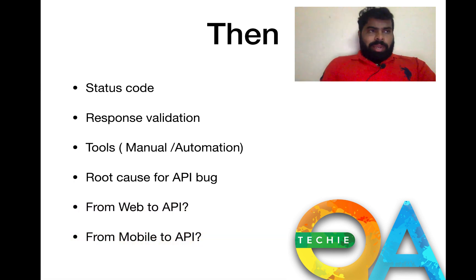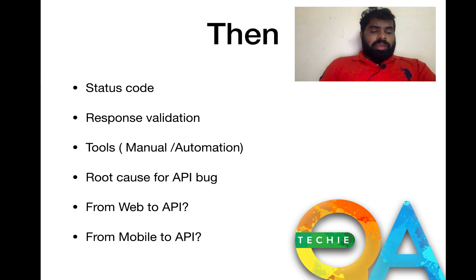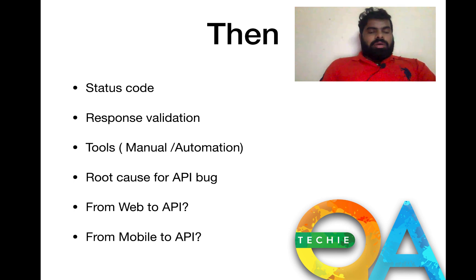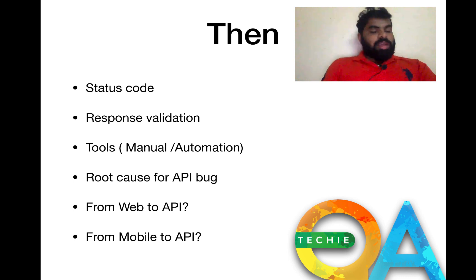Another question: 'I have given you a mobile app — how do you do API testing?' You need a proxy tool. By using a proxy tool, you can capture all APIs the mobile app uses and test them in Postman. Tools include Charles Proxy, Burp Suite, and Fiddler. If the app uses HTTPS, you need to install a certificate. If certificate pinning is enabled, you cannot capture APIs without developer help.